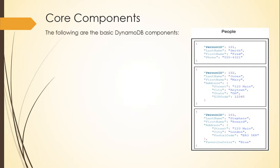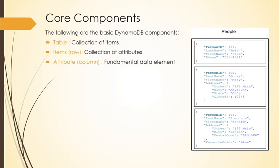The core components of DynamoDB are tables, items, and attributes. A table is a collection of items, an item is a collection of attributes, and an attribute is a fundamental data element. Similar to a relational database, an attribute is like a column or field, an item is like a row, and a collection of rows and columns forms the table.